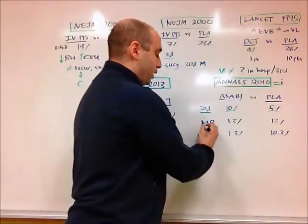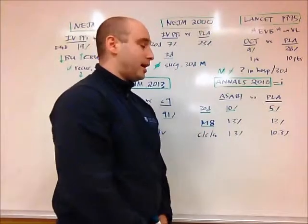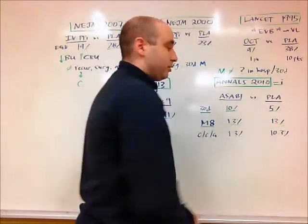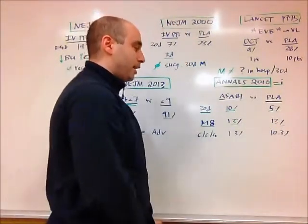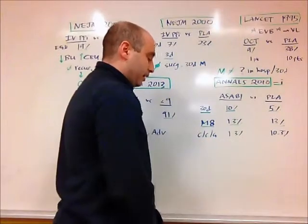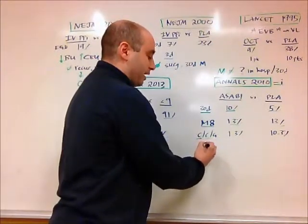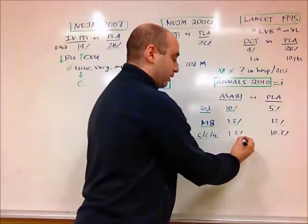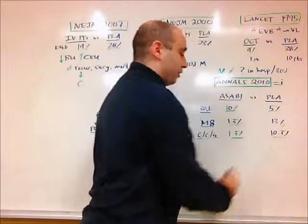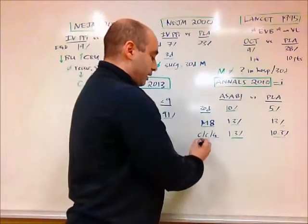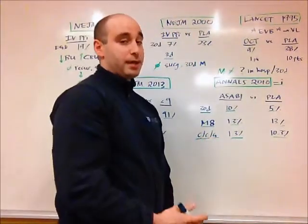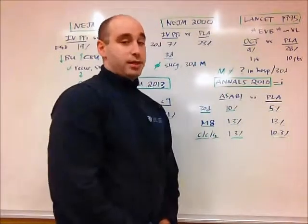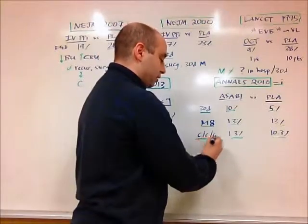But when they looked at 8-week mortality, and this is all-cause mortality, in the aspirin group there was only 1.3% mortality, versus the placebo group had 13% mortality. Possibly more interestingly, when they looked at a surrogate, a combined marker of cerebrovascular, cardiovascular, and GI mortality, they again found that the aspirin group had lower mortality, 1.3% versus 10.3%. And this is interesting, because the cerebrovascular and cardiovascular is the type of mortality we're trying to prevent with the aspirin, and the GI mortality is the mortality we're trying to avoid with the aspirin. So this really gets at the crux of the question.